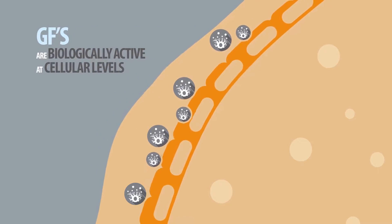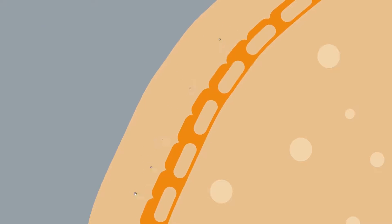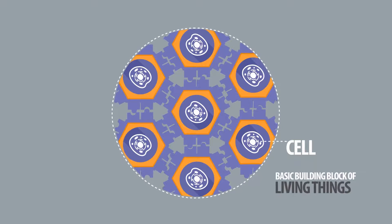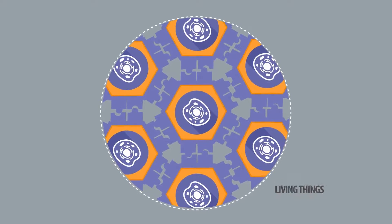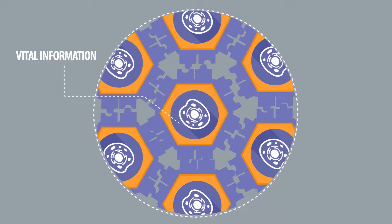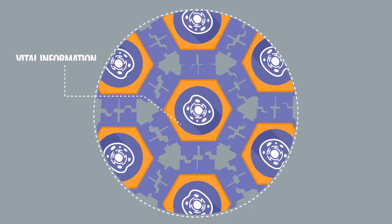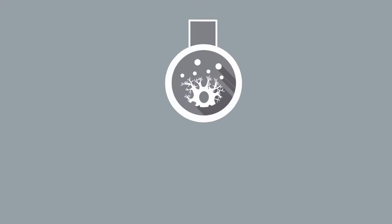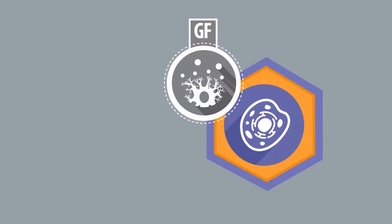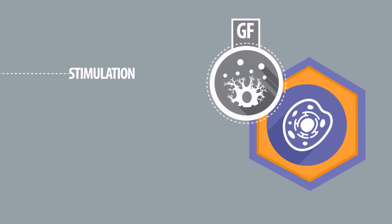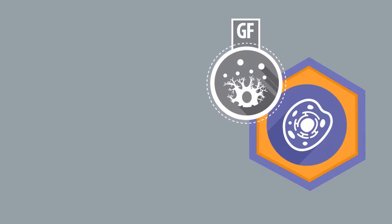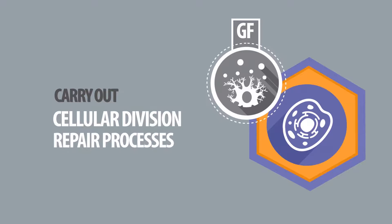We understand that the cell is the basic building block of living things, consisting of several complex elements where vital information is processed to generate a response either for itself or for another adjacent cell. A GF activates a site in a cell to generate a specific response that could be of different types such as stimulation, specialization or differentiation. It can also carry out cellular division or repair processes, modulate the information, and inhibit or exacerbate cellular processes.